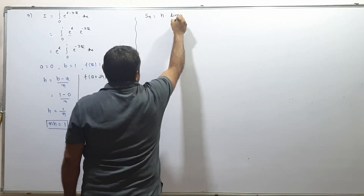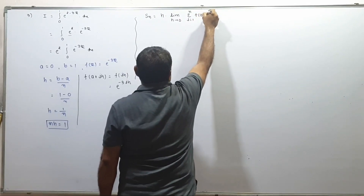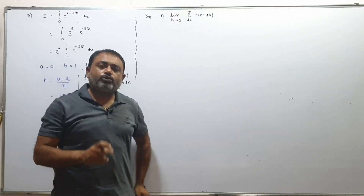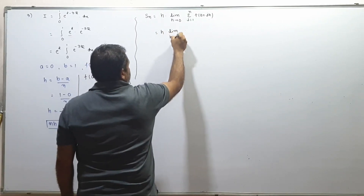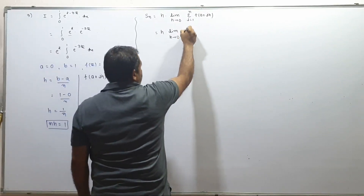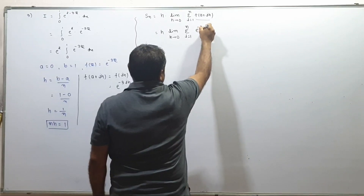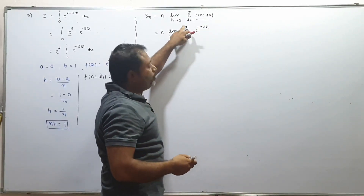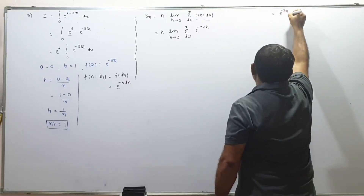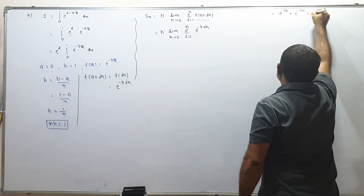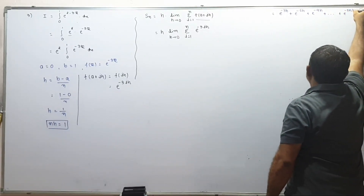So: h times limit h tends to 0, sigma i equals 1 to n, e^(minus 3·i·h). The terms are: e^(minus 3h), e^(minus 6h), e^(minus 9h), ..., e^(minus 3nh). Clear?